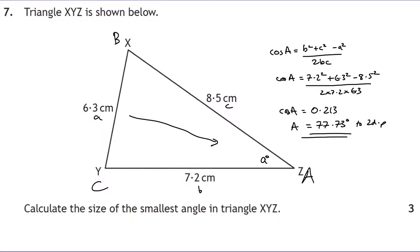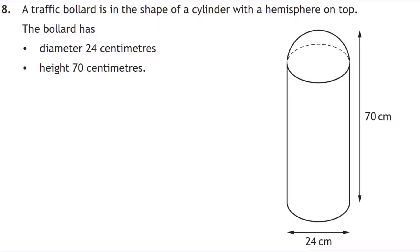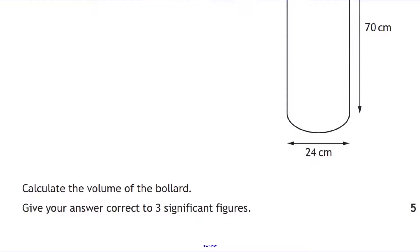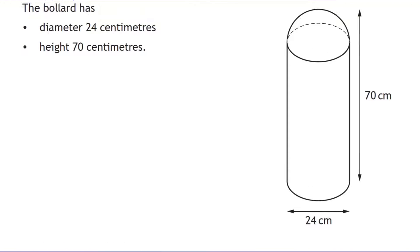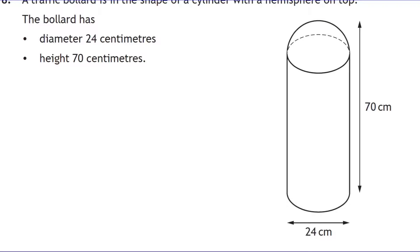Question eight is a volume question. Looking at the diagram, we have two shapes — a cylinder and a hemisphere on top. The answer needs to be given to three significant figures, so keep that in mind. We'll start with the hemisphere.